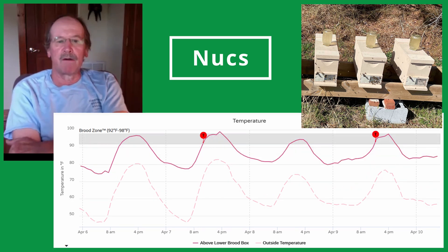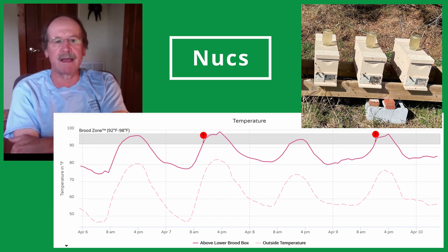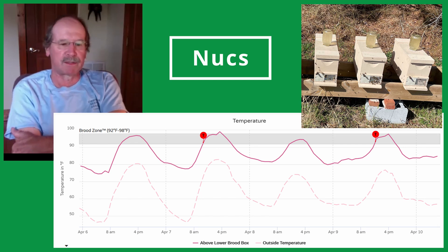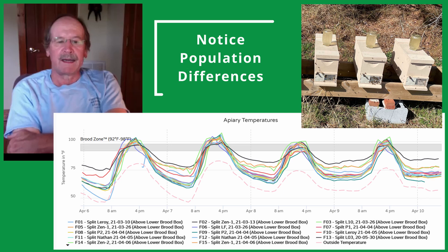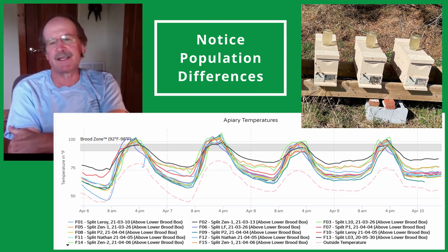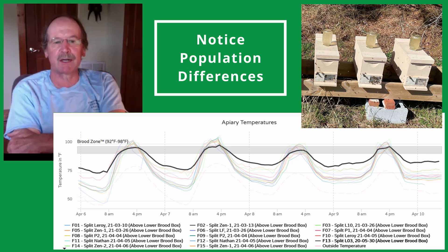Let me compare this to an overwintered nook — a nook from last year that was brought through the winter. We have lower peak temperatures during the day and higher temperatures at night, which means there are more bees in this box and they're doing their best to thermoregulate. An easy way to compare what these nooks are doing is to go into a summary view, where we see all the nooks overlaid. When you hover over the overwintered one — F13 — we can clearly see they're warm at night, warmer than the others, and the peaks during the day are actually reduced by the bees fanning to try and maintain that temperature.